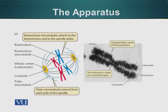When the process begins, the polar microtubules are responsible for pushing the mitotic spindle apart, and the kinetochore microtubules are responsible for pulling the chromosomes apart.